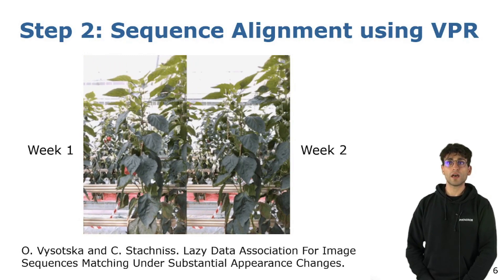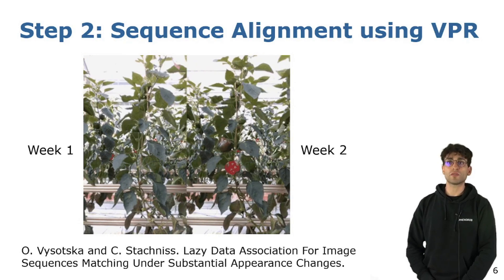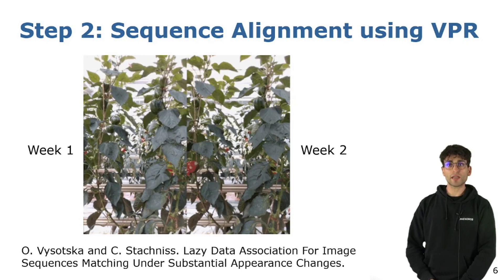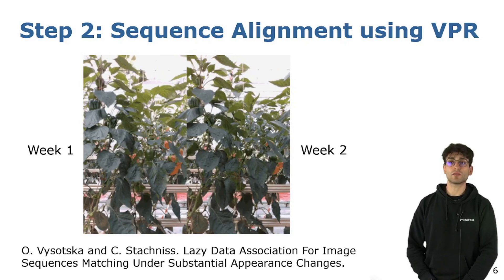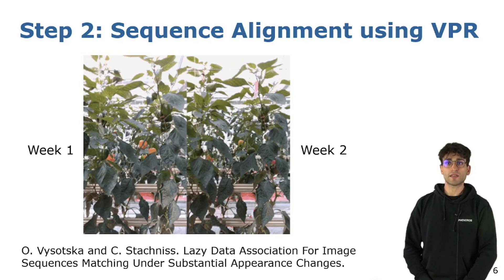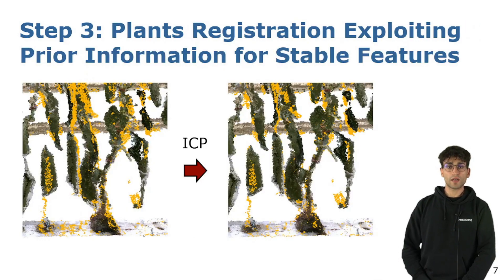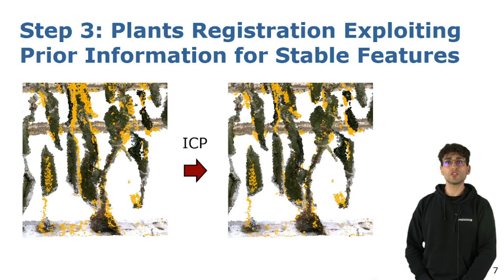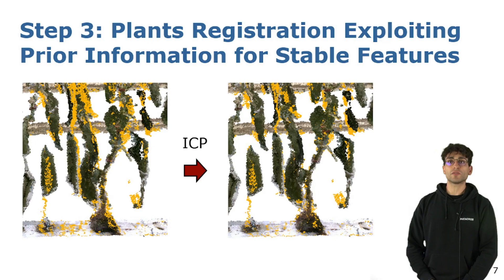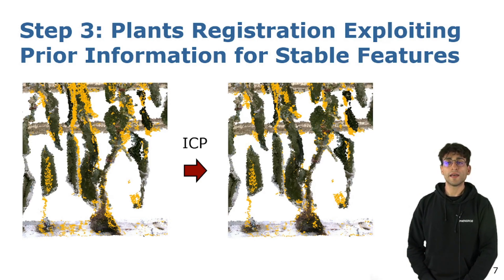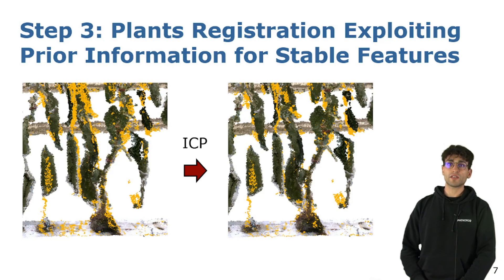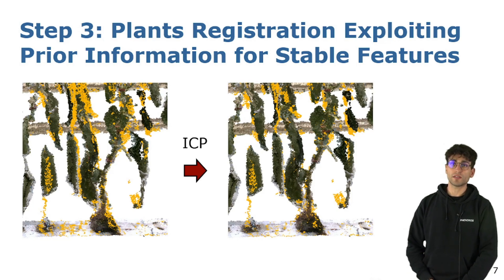This allows us to align the new sequence with the previous one. The strength of this work is that it is able to handle highly repetitive scenes robustly, as shown in this example. Exploiting the VPR results, we can, for each new frame, compute the corresponding point cloud using the same pose of the reference image. In this way, we have a good initial guess for the 3D point registration.